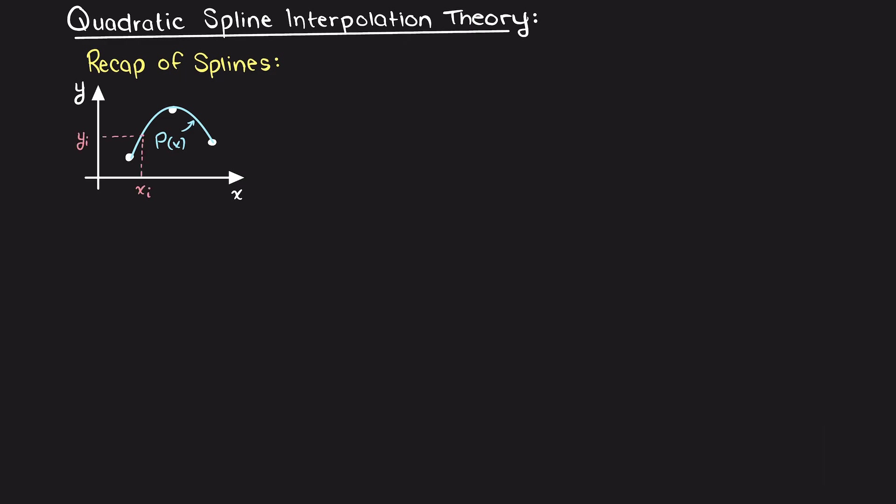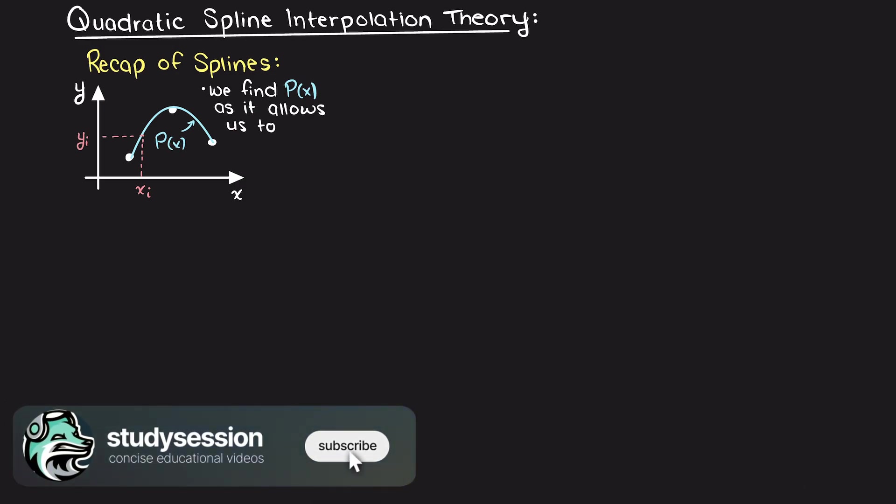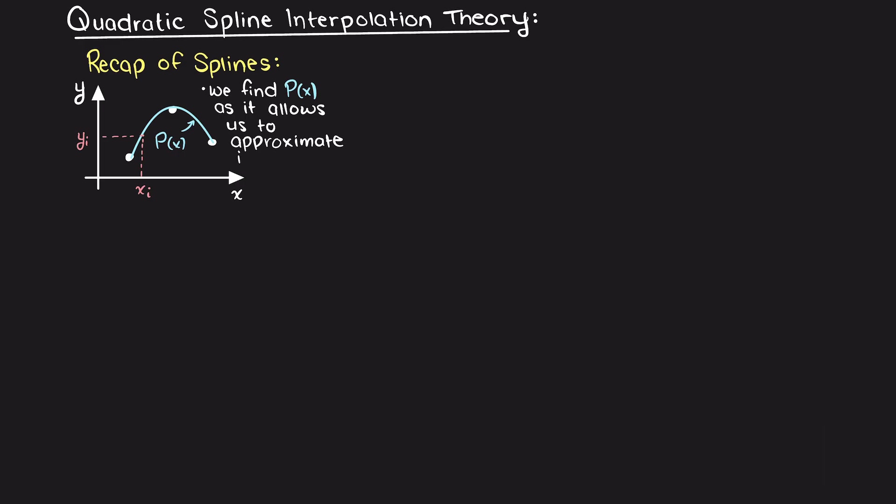If you recall, in the past video, we talked about what spline interpolation is, so if you missed that video, check out the link in the description down below. Briefly, splines are an interpolation method that allows us to fit smaller polynomials to a subset of our given data. In this diagram here, we are given the white data points, and the blue line drawn symbolizes the quadratic interpolating polynomial that we will learn how to find here shortly.